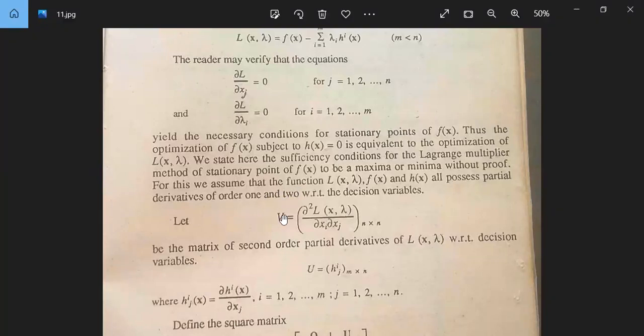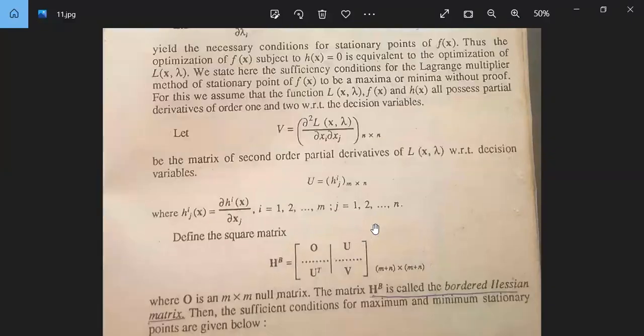For this, we assume that the function L(x, lambda), F(x) and H(x) all possess partial derivatives of order 1 and 2. Second order derivatives are needed because we have to compute del squared. Let V equal to del squared L(x, lambda) by del x_i del x_j be the matrix of second order partial derivatives of L(x, lambda) with respect to decision variables. This is n by n matrix.